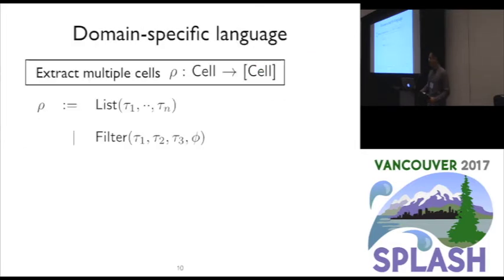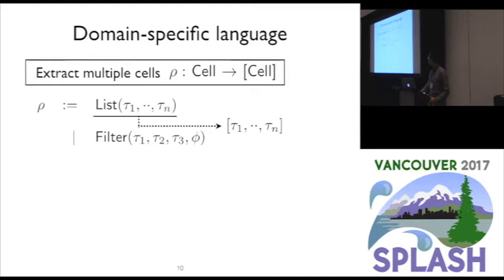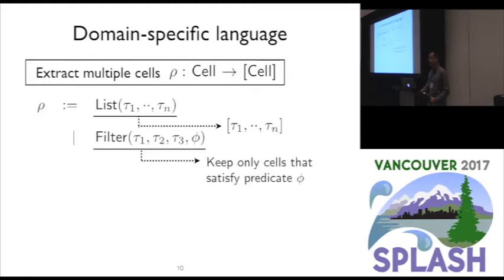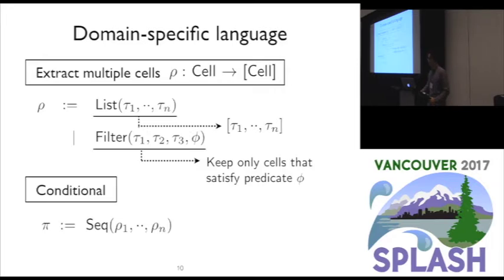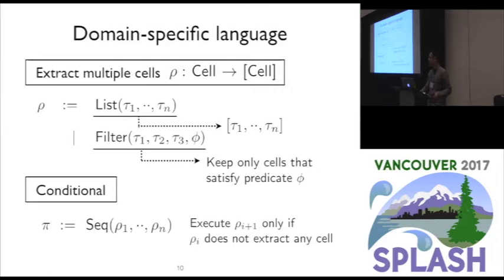Building upon cell programs, our language supports another construct called a simple program that extracts multiple cells given the input cell. Our language currently supports two simple programs: list and filter. A list program takes n cell programs as arguments and simply puts them together. A filter program takes a range of cells and keeps only those that satisfy the predicate fee. On top of simple programs, our language allows a restricted form of conditional defined by the sequence construct, which executes the next simple program only if the current one fails to extract any cell.